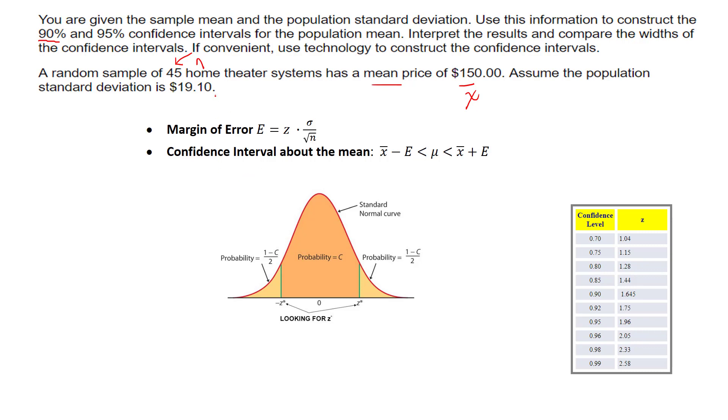Assume the population standard deviation is $19.10. If you get your formula sheet out, you see that you take the mean minus and plus the margin of error. I have the mean. I need z for 90%, so I might use my little cheat table over here because I'm lazy, and I see that will be 1.645.